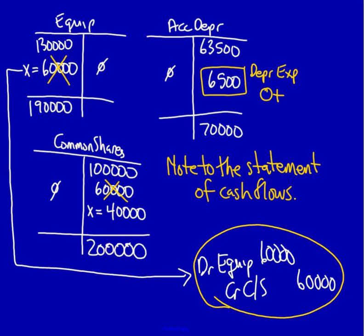Let's go down to common shares. What would show up? Only the $40,000. That would be an issue of shares, and that would be an inflow because we're receiving cash. We gave away shares, we received cash. So that would be financing, plus. Nothing else would show up on the statement of cash flows for either the equipment, accumulated depreciation, or the common shares.